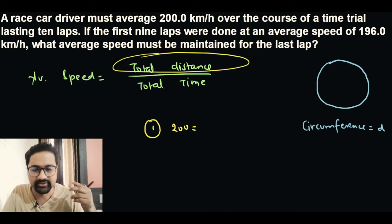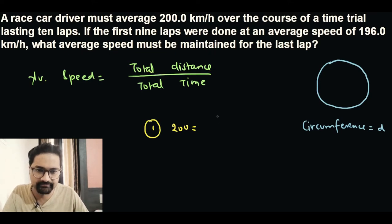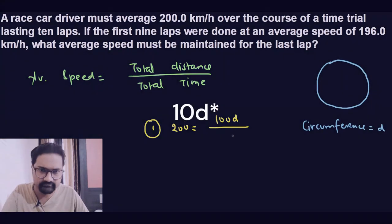The distance will be, since it is covering 10 laps and one lap is of distance D, so definitely 10 laps are going to be 10D distance. Then we talk about the total time which we do not know, so let's call it T. That is the total time which is taken to cover all the 10 laps.